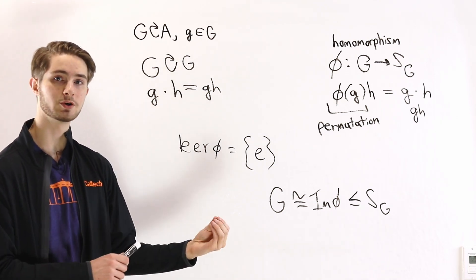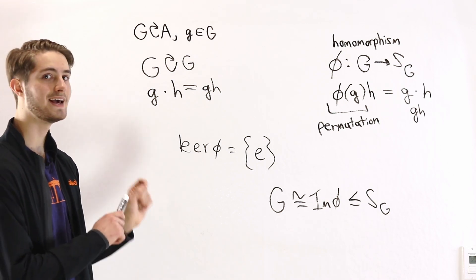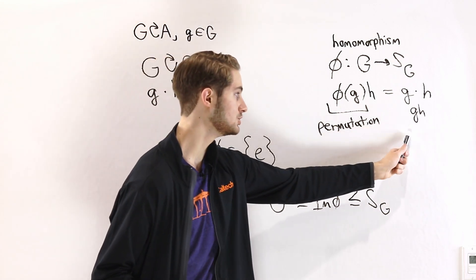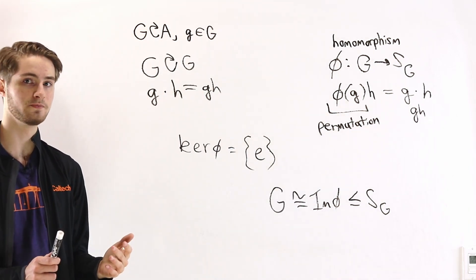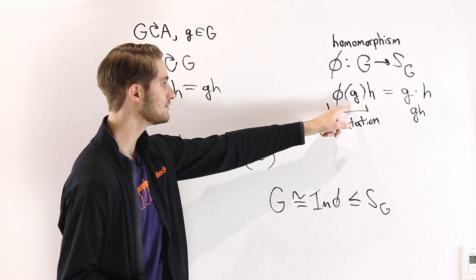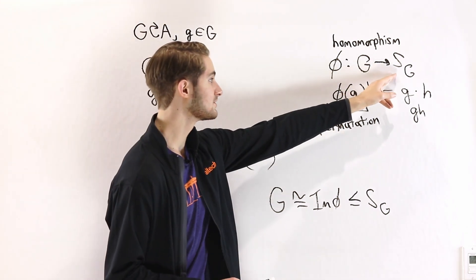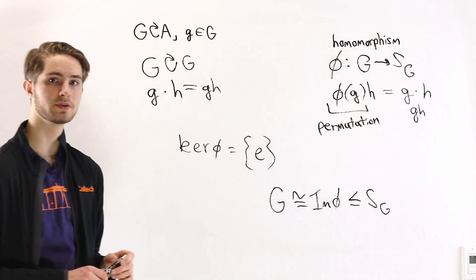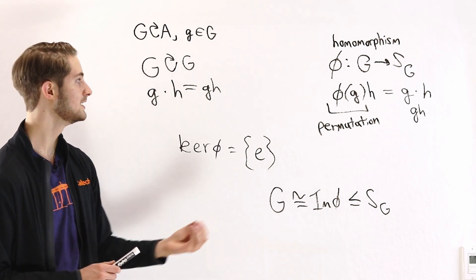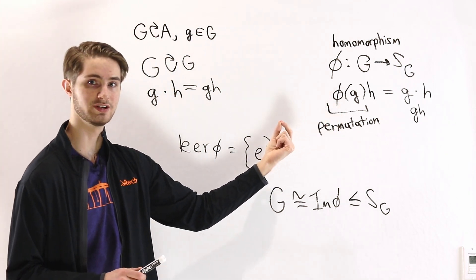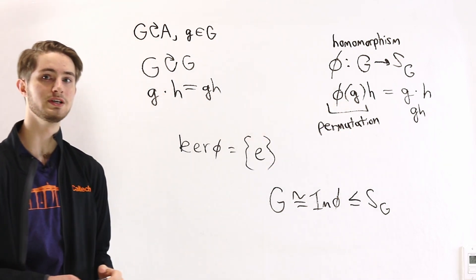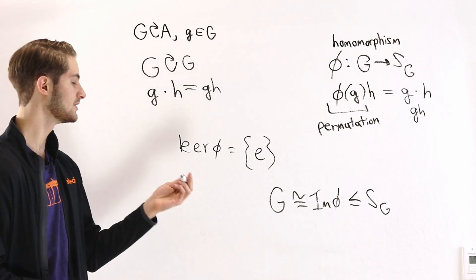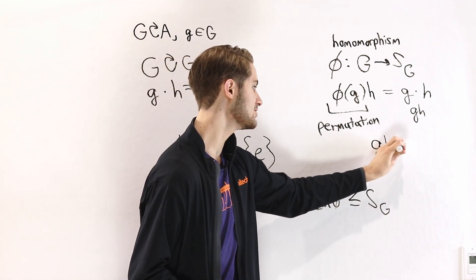In fact, the reason it's a permutation — as we saw at the beginning — is that every element has to have a two-sided inverse, and therefore multiplying g times h has to be a bijection. As a result, we can associate every single element of the group with an element of the symmetric group, in other words just a permutation on the elements of G. And because one of the group axioms is that multiplication is associative, this map φ(g) has to be a homomorphism.